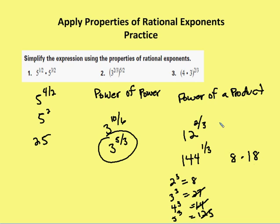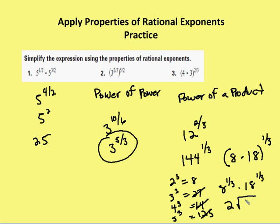Now I can use my power of a product property again. I have the cube root of 8 times 18, which is the same as 8 to the 1/3 times 18 to the 1/3. And 8 to the 1/3 is just 2, since 2 times 2 times 2 is 8. So I get 2 times the cube root of 18, or 2 times 18 to the 1/3.